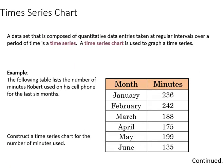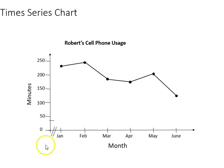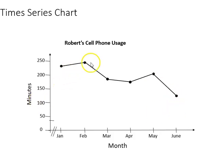Another bivariate chart is what we call the time series chart. In the time series chart, at least one of the variables will be a measure of time — in this example, we're going to look at months. The variable we're graphing is the amount of minutes used on a cell phone by Robert. We can see Robert's cell phone minute usage was rather high in January and February, declined in March and April, had a slight uptick in May, then went back down in June. This is a good way to examine trend lines — anything with three or more points can be called a trend line.